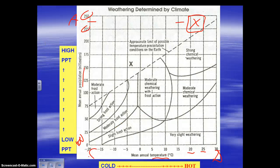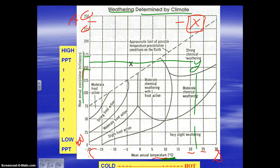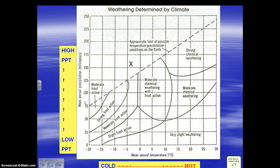Here's a graph you're very likely to see on the regents this year. Basically, this shows weathering determined by climate — different climates of the world. The x-axis shows temperature and the y-axis shows mean annual precipitation, measured in millimeters. For example, a point Y at about 20–25 degrees Celsius with 150–175 millimeters of precipitation would fall in a particular weathering zone.